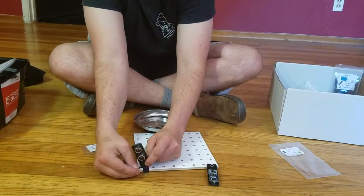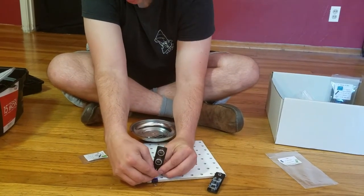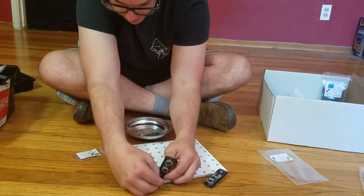Put the 6-32 through the arm and through the hole in the sonar sensor holder. I can't do this one as easily—there we go, got it.